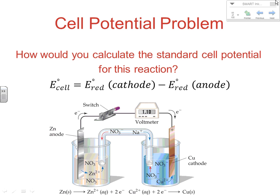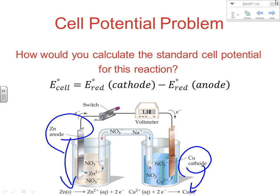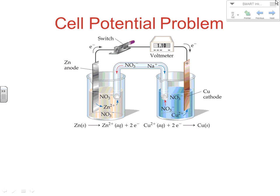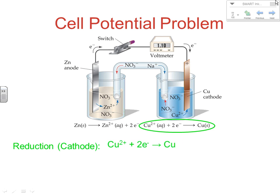So how do we calculate the standard cell potential? We use: E° cell = reduction potential at the cathode minus reduction potential at the anode. We need to identify the cathode and anode and the reactions occurring at each spot. In the example here, at the cathode: Cu²⁺ + 2e⁻ → Cu has a reduction potential of +0.34 volts. At the anode, when we look up Zn²⁺ + 2e⁻ → Zn as the reduction, it has a reduction potential of −0.76 volts.